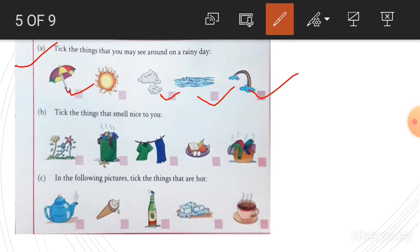Tick the things that smell nice to you. Flower, yes. Dustbins, no. Washed clothes, you can take this one also. And smell of different kinds of food, yes, it also smells good. And dirty clothes, no, this one is not good to smell. To smell different things, we smell with our nose.